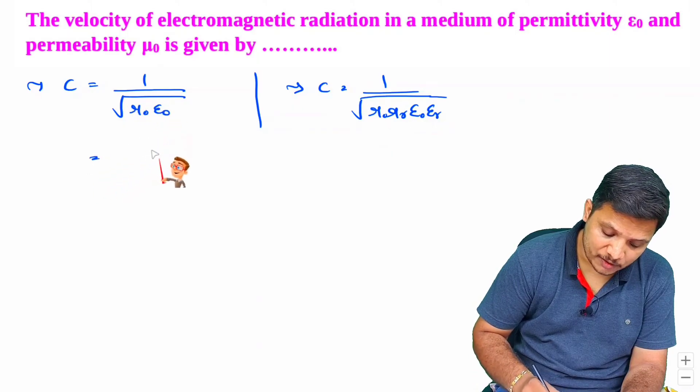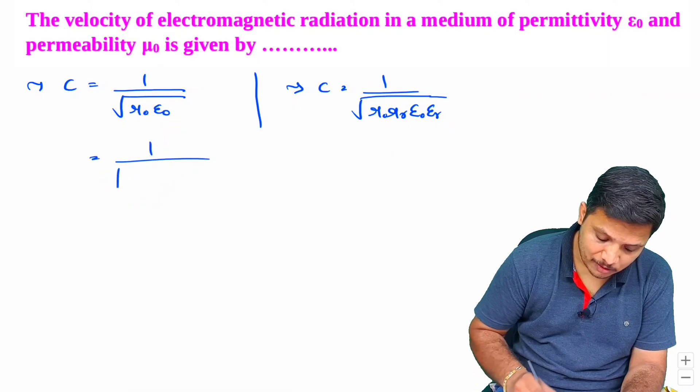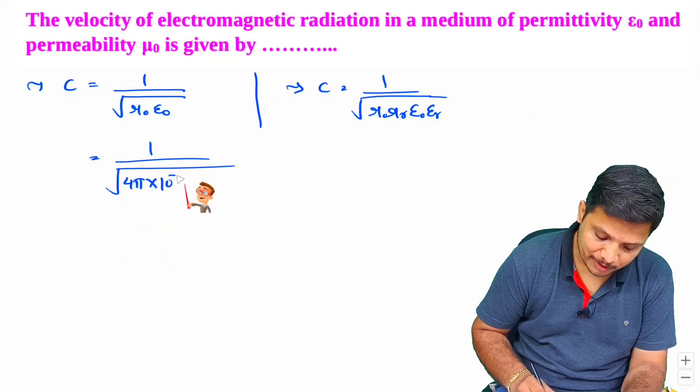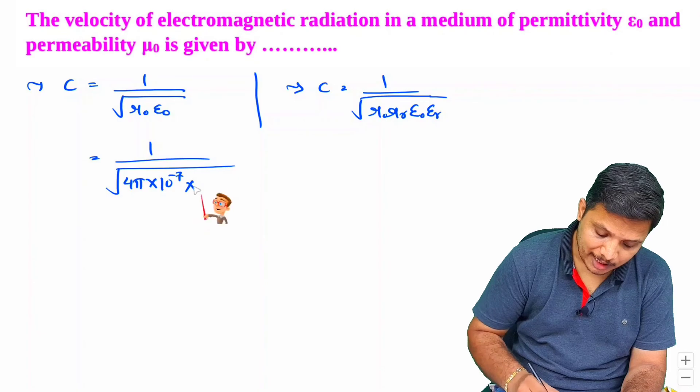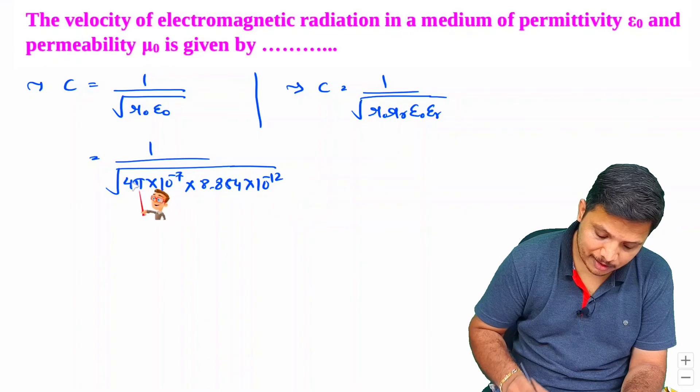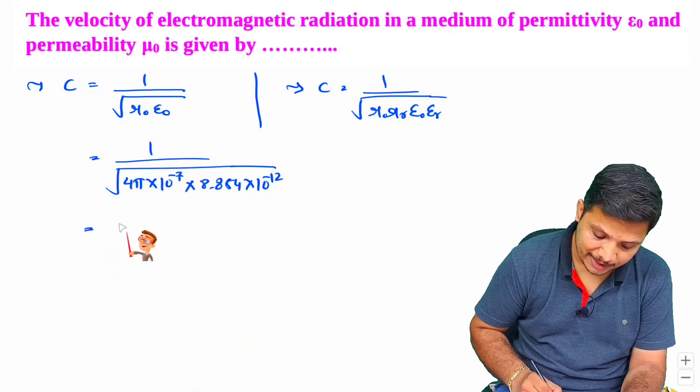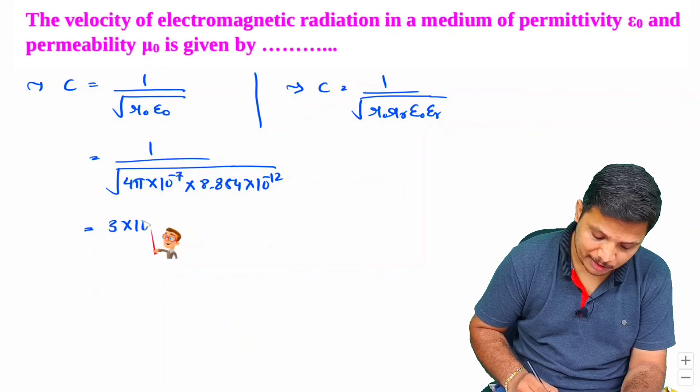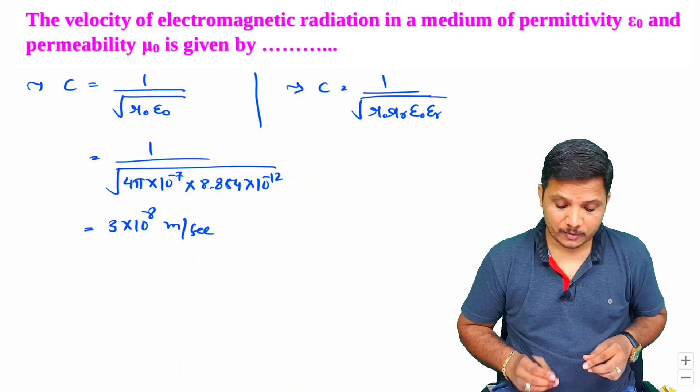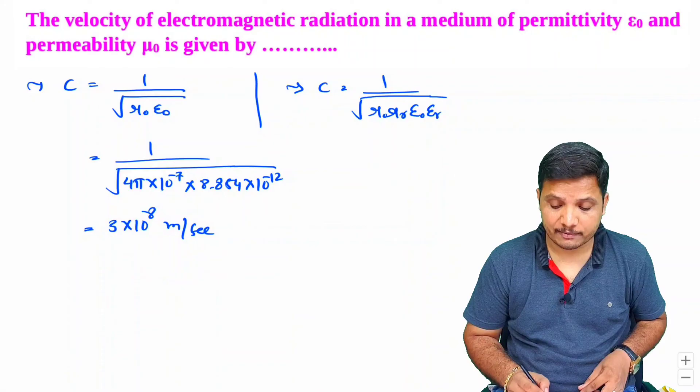And if you place values of μ₀ and ε₀, then you will be finding μ₀ is 4π × 10⁻⁷ and ε₀ is 8.854 × 10⁻¹². And if you solve this, you will be finding this is c equals 3 × 10⁸ meter per second. So that is what the case which we have for free space.